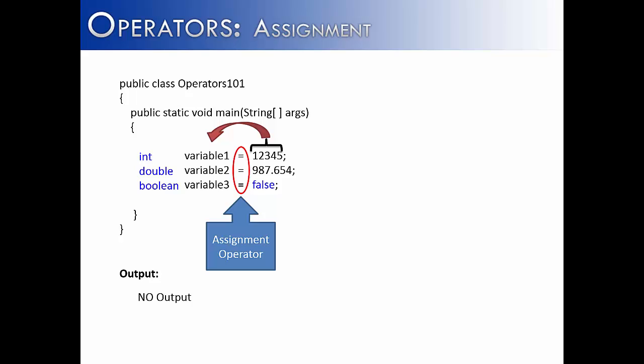It's actually taking 1, 2, 3, 4, 5 and assigning it into variable one. On the second line, 987.654 is being assigned into variable two, and then false is being assigned into variable three. Again, it is not checking for equality.